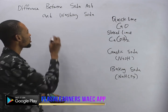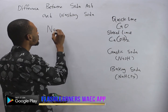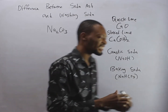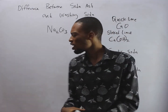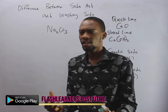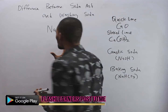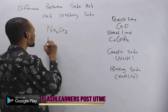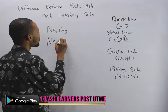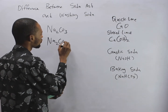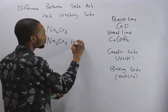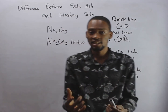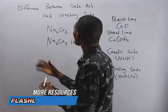Now this takes us to soda ash. What is soda ash? Soda ash is simply Na2CO3 — sodium carbonate. That is soda ash. What differentiates it from washing soda is that soda ash is anhydrous sodium carbonate, while washing soda is Na2CO3·10H2O — it contains water of crystallization.